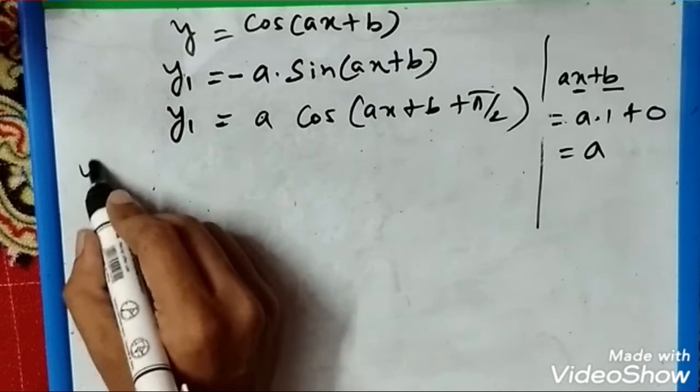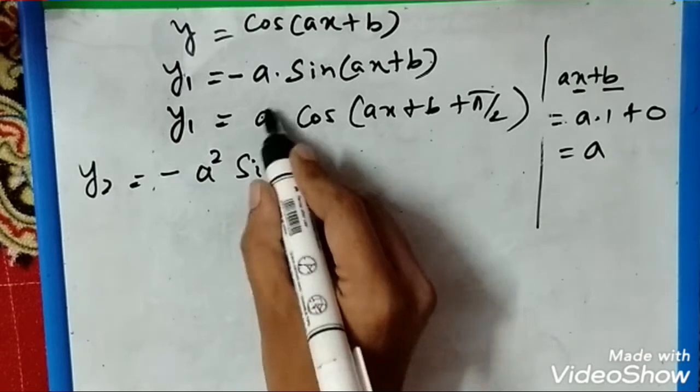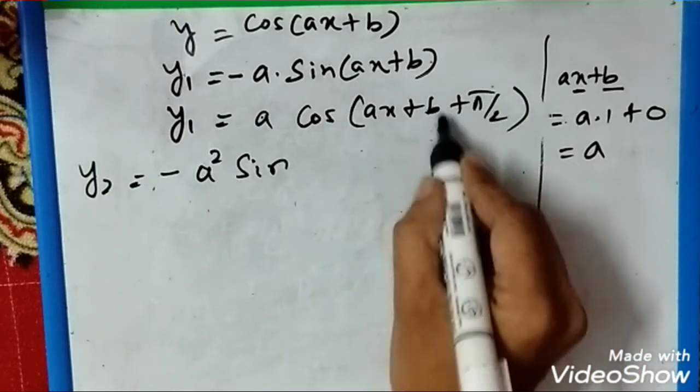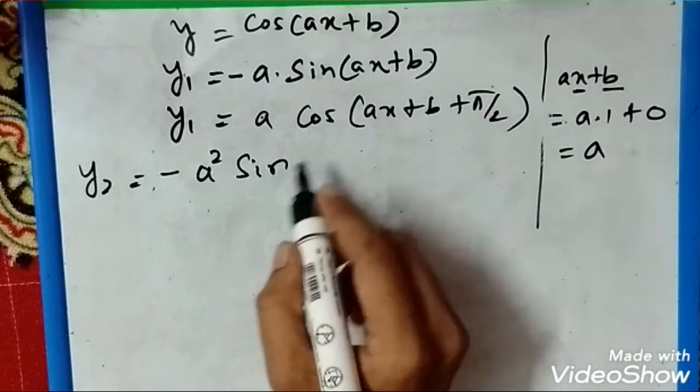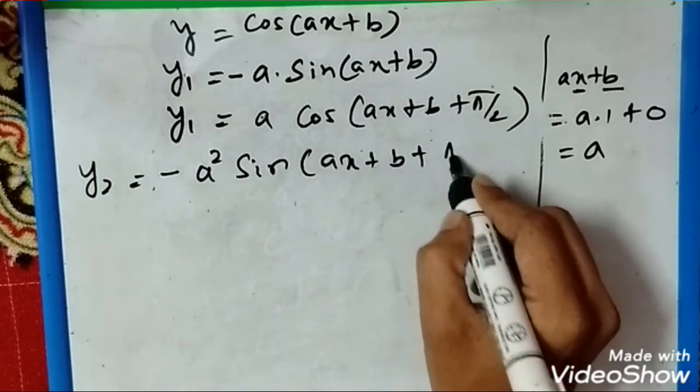Again we differentiate: y2 equals -a² sin(ax + b + π/2), because you get another factor of a from the chain rule. So it becomes a², and we have sin of ax + b + π/2.